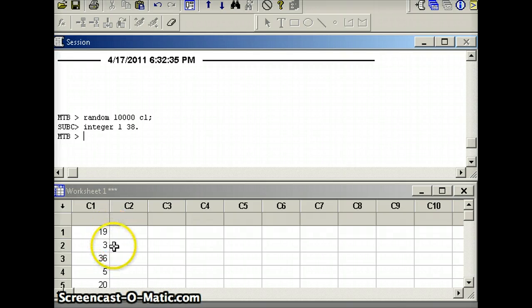19 is a loser. 3 would be a winner. 36 is a loser. 5 is a winner. 20 is a loser. We want to put these in order so we can see how many winners and how many losers we had. I'm going to say sort c1 into c2, and then we're going to count how many numbers in c2 are less than or equal to 18.